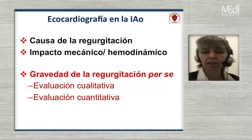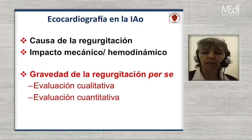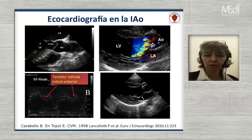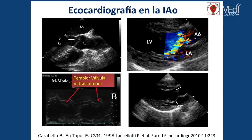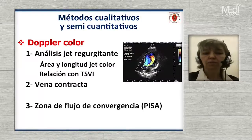Después de haber visto los principales aspectos etiológicos y fisiopatológicos de la insuficiencia aórtica, entramos ahora en el detalle de la valoración ecocardiográfica. Ya vimos las causas y el impacto mecánico; ahora vamos directamente a la gravedad per se de la regurgitación. Podemos tener una idea de la causa y la gravedad viendo la válvula. El jet de regurgitación va a tener impacto sobre la válvula mitral dependiendo de la dirección del flujo: si es excéntrico, podemos ver un temblor en la válvula anterior de la mitral, o eventualmente un domo invertido por el jet que impacta sobre la misma.